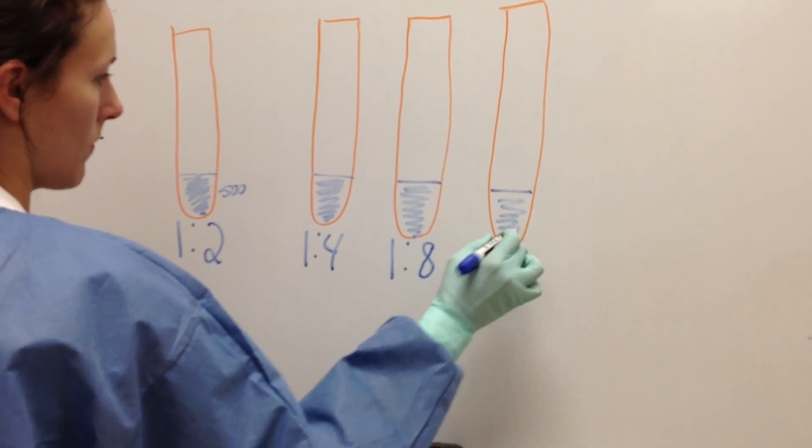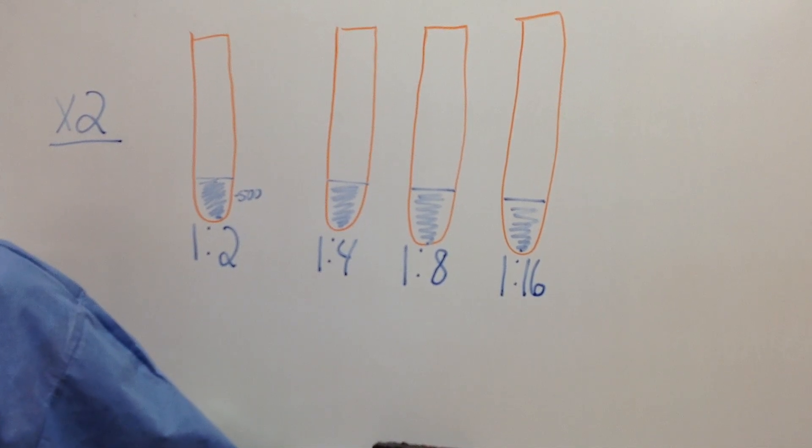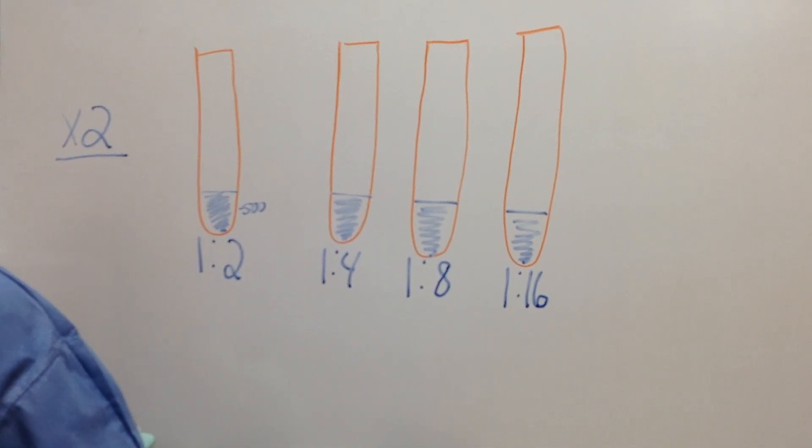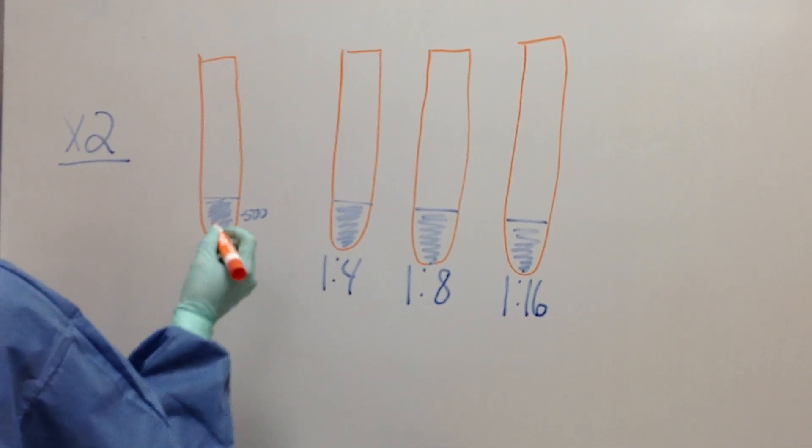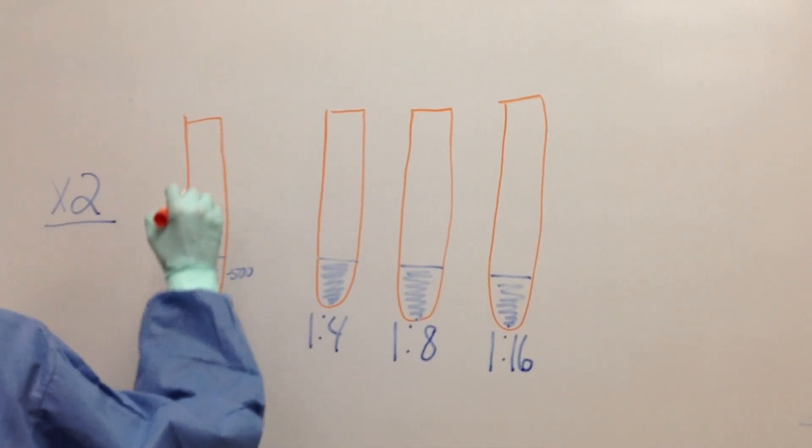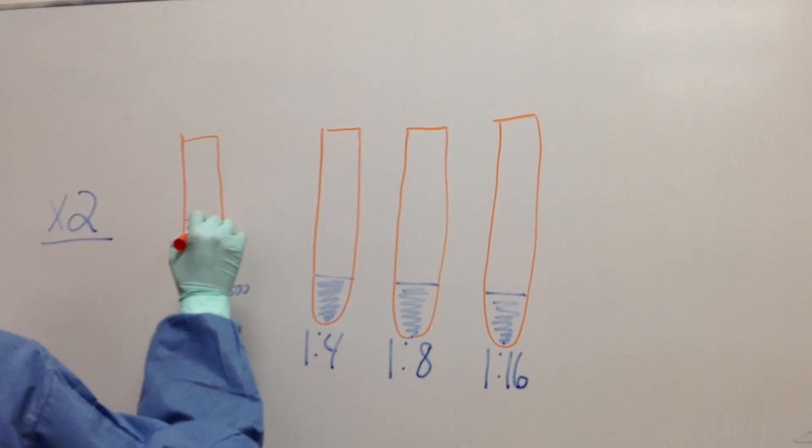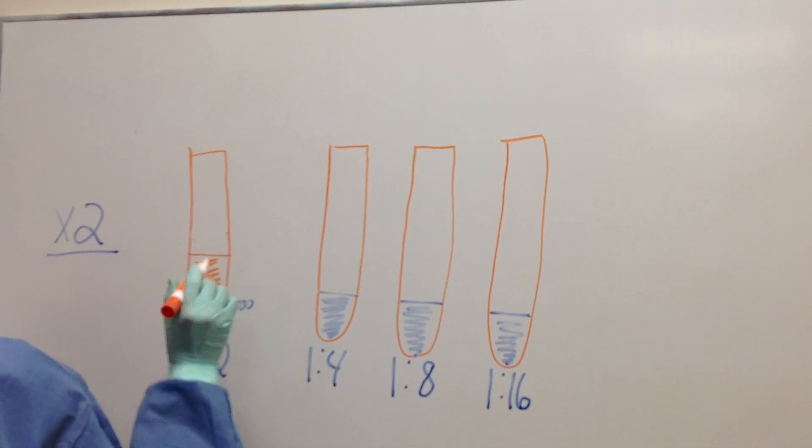So we have our tubes labeled and we've added the same amount of diluent water into all tubes. Because we're making a 1 to 2, we need to add the same amount of our sample to that first tube, which is 500 microliters. We will add to the first tube.